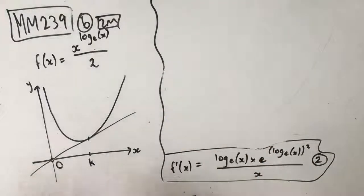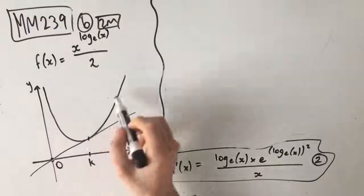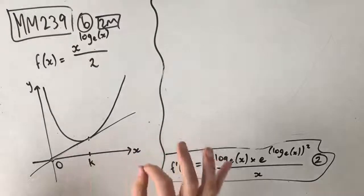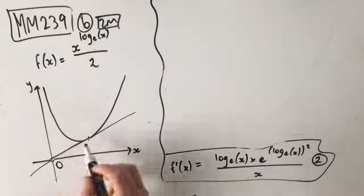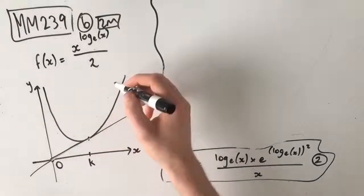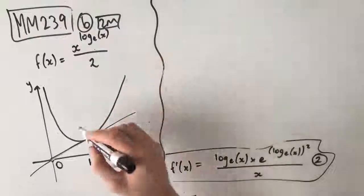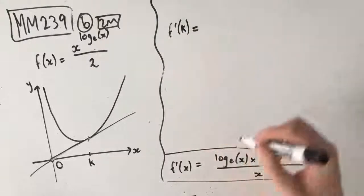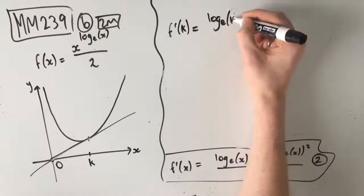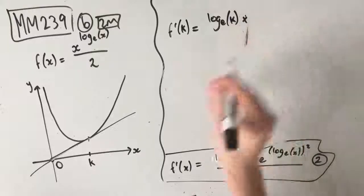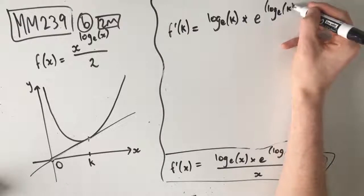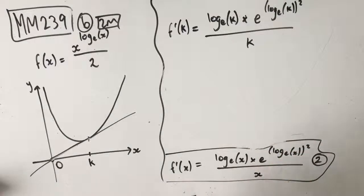We need to recognize that the tangent has the same gradient as the original function at the point x equals k, and it also has a gradient of rise over run from the point of tangency to the origin. Whenever we come across these questions, we want to make the equivalent gradient from rise over run equal to the instantaneous gradient of the function at that point. The gradient at x equals k equals f dash of k, which is log e of k times e to the power of log e of k squared, all over k.